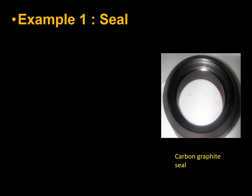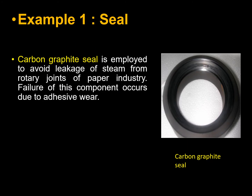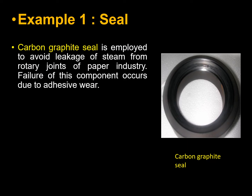For example, carbon graphite seals are employed to avoid the leakage of steam from rotary joints in the paper industry. Failure of this component occurs due to adhesive wear.